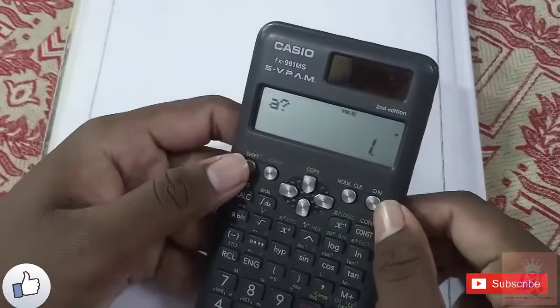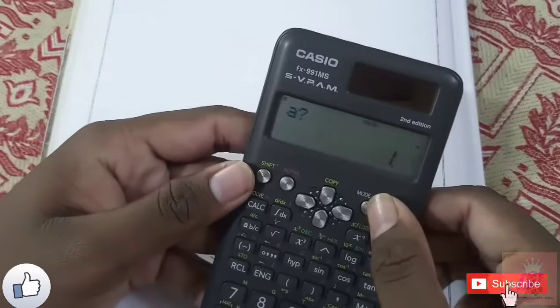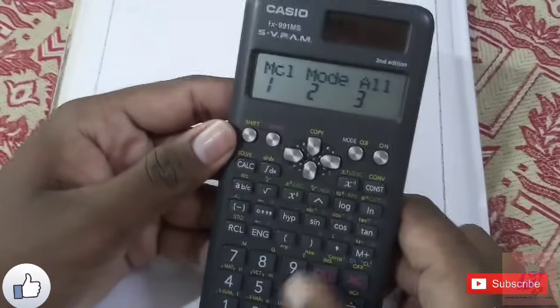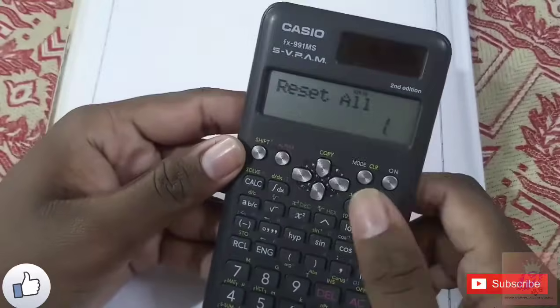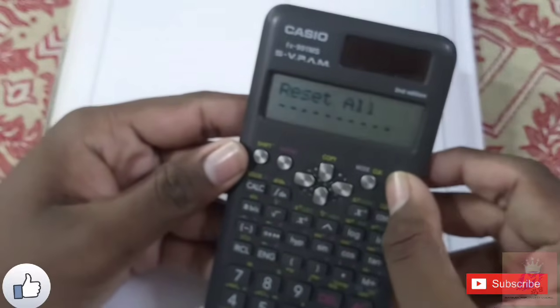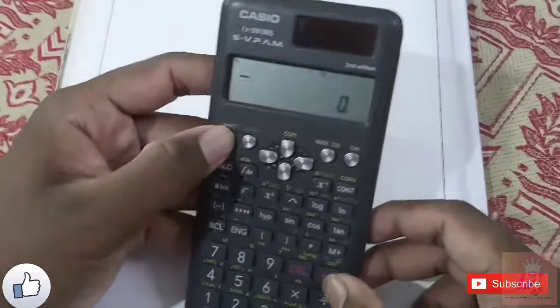To reset the calculator, press the mode CLR button, then press 3 to reset all settings, and then press shift and AC.